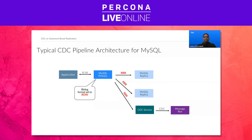This is how a typical CDC pipeline would look like. There is an application that does writes to MySQL. All writes to MySQL will be propagated to replicas. The CDC service sits alongside MySQL replicas. It also subscribes to the MySQL replication stream, pretending as a replica. It converts the binlog events it receives into CDC events and then publishes them onto a message bus.